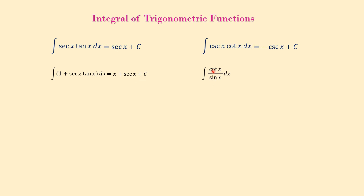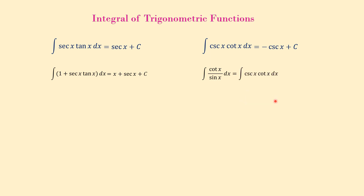Another example: what is the integral of cotangent of x over sine of x dx? None of our formulas work for this expression directly, but we can rewrite it. Since 1 over sine of x is cosecant of x, the expression becomes cosecant of x times cotangent of x. Using the formula, the integral of cosecant of x cotangent of x is negative cosecant of x plus C.